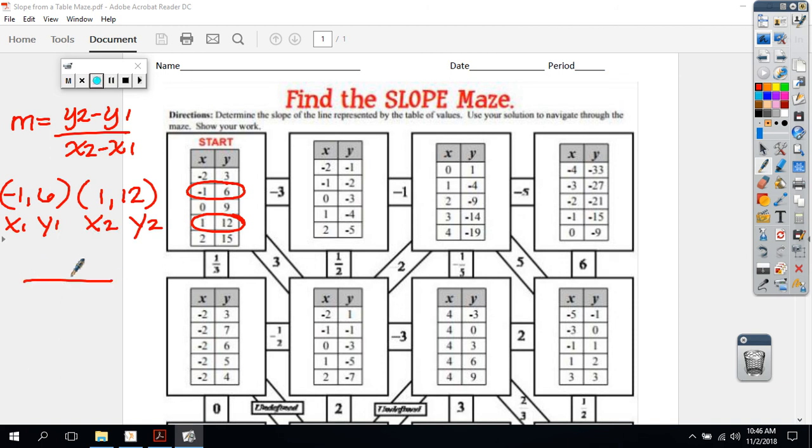So I'm going to plug into my formula. I need my fraction bar, my two subtraction signs. So now I want my Y2. My Y2 is 12, so that goes there. And I need my Y1 in my upper right. So that is positive 6. That will go there.